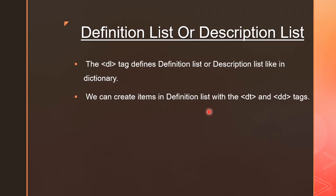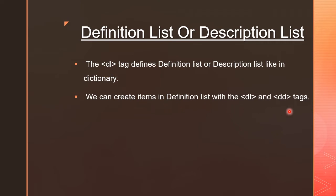We can create items in a definition list with the DT and DD tags. These two tags are placed within the DL tag, just as list item LI tags were enclosed within OL or UL. Similarly, DT and DD tags will be enclosed within the DL tag, so it is known that we are writing a Definition List.